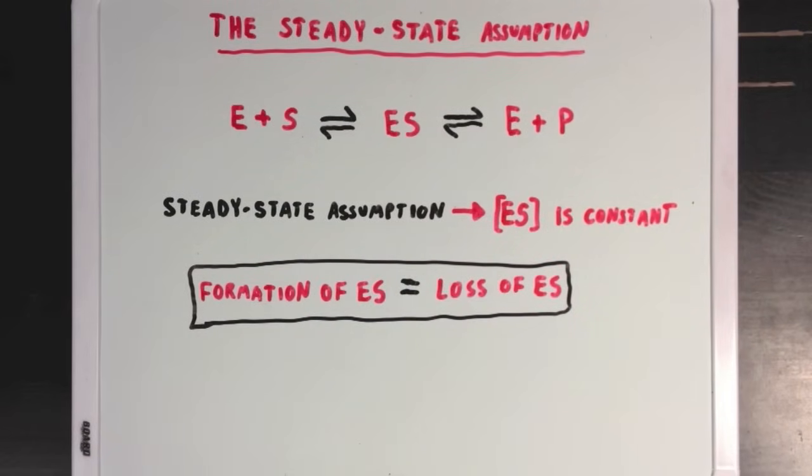Now, notice that I've used equilibrium arrows between these steps, and that was to show the idea that these reactions, like any reaction, can go forwards or backwards. Our enzyme-substrate complex doesn't have to form products. It could just as easily dissociate back to an enzyme and a substrate molecule. So I'll call these reverse reactions minus 1 and minus 2.